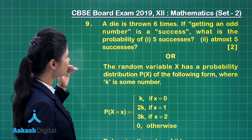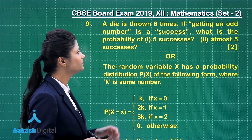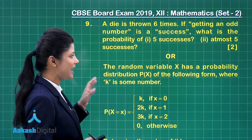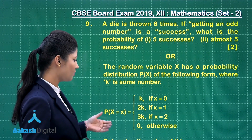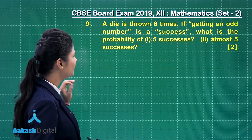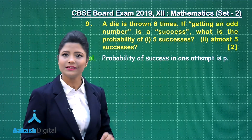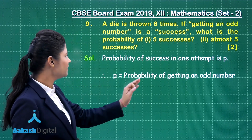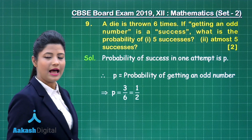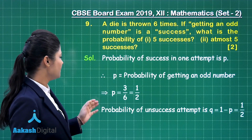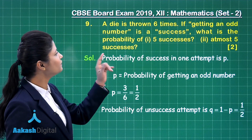Let's discuss question number 9. The first choice states: a die is thrown 6 times; if getting an odd number is a success, what is the probability of getting 5 successes and getting at most 5 successes? This carries 2 marks. The probability of success in one attempt, p = probability of getting an odd number = 3/6 = 1/2. The three odd numbers are 1, 3, and 5. The probability of failure q = 1 - 1/2 = 1/2.